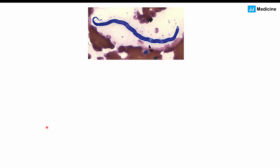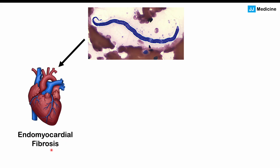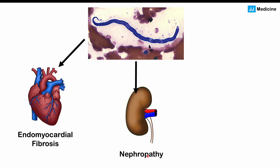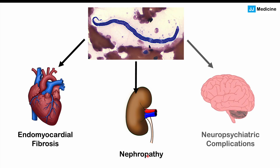More recently shown comorbidities in patients with loa loa infections include endomyocardial fibrosis — scarring inside the muscle of the heart — nephropathy or kidney damage, neuropsychiatric complications, and spontaneous encephalitis. Even patients who feel fine with no symptoms at all can develop some of these complications later in life, which is why this condition is now being more actively addressed.